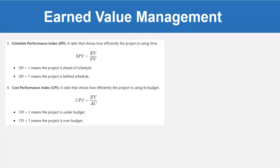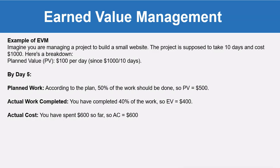Now let's look at a simple example of EVM. Imagine you are managing a project to build a small website. The project is supposed to take 10 days and cost is $1,000. So the planned value per day is $100, since $1,000 divided by 10 equals $100.